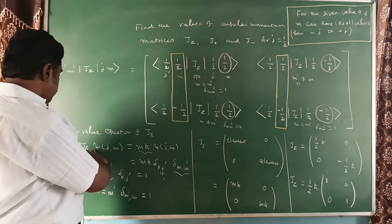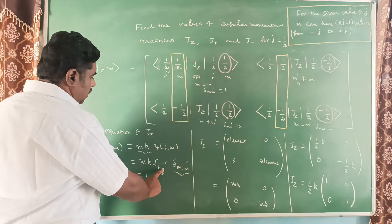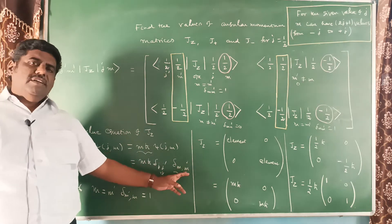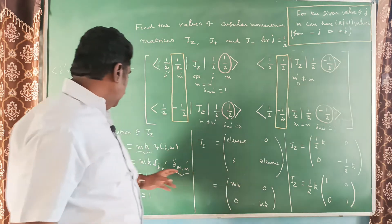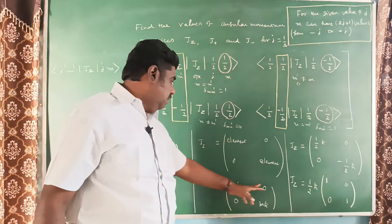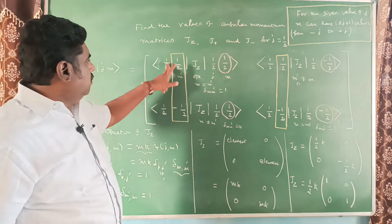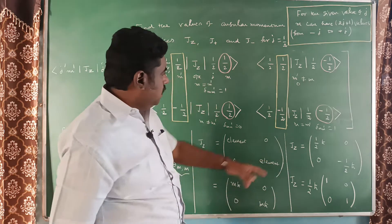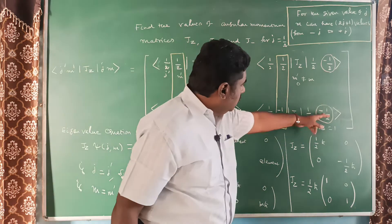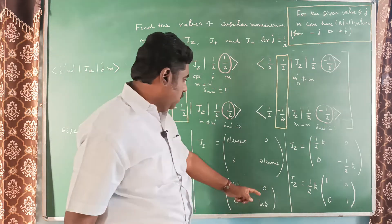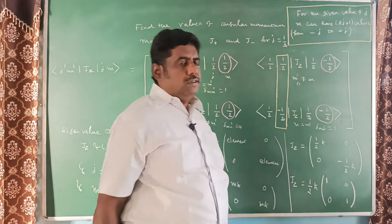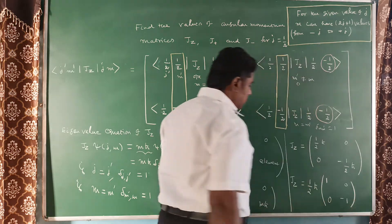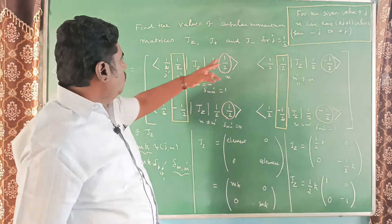The value of each element is M·ℏ. At the first diagonal position, M is plus 1/2, so the element is (1/2)ℏ. At the second diagonal position, M is minus 1/2, so the element is (−1/2)ℏ. The J_z matrix is therefore: (1/2)ℏ, 0 / 0, −(1/2)ℏ. Taking (ℏ/2) outside, we can write J_z = (ℏ/2) times the matrix [1, 0 / 0, −1]. This is the value of J_z for j equal to 1/2.